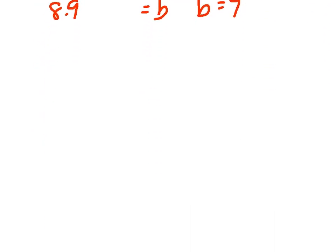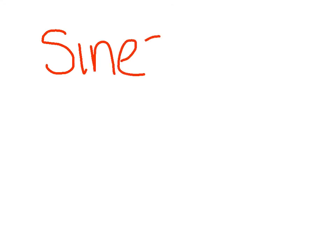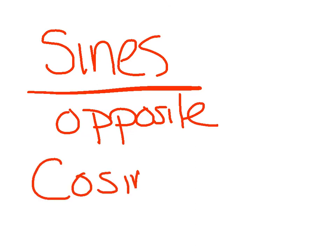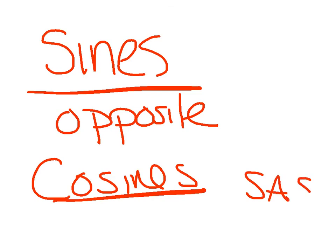There you have it — the law of cosines and a little bit of review of the law of sines. Just to keep the two straight: use sines if you have opposites — sides and the angle opposites. Use cosines when you have side, angle, side. We look forward to answering any questions in class tomorrow. Have a great night.